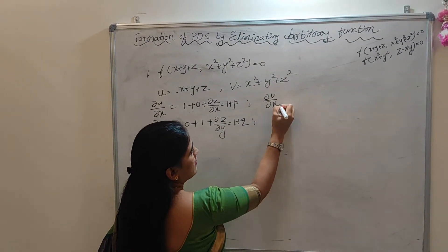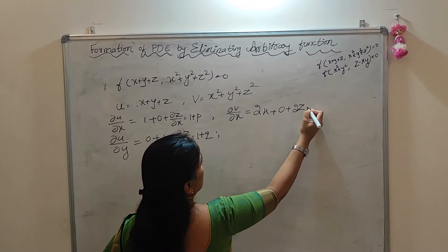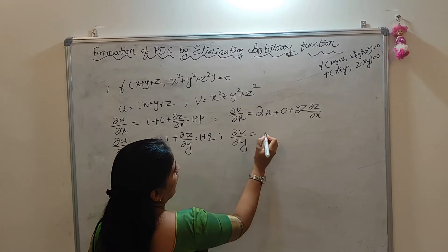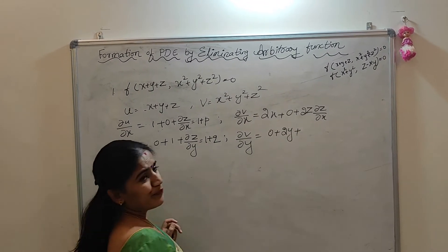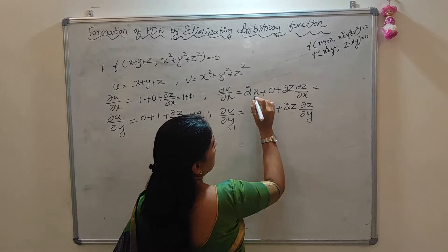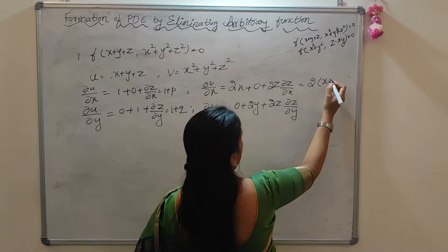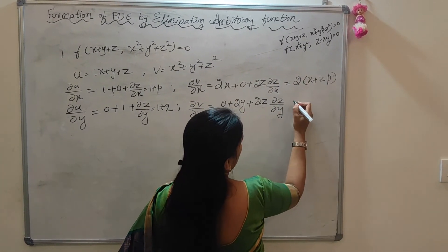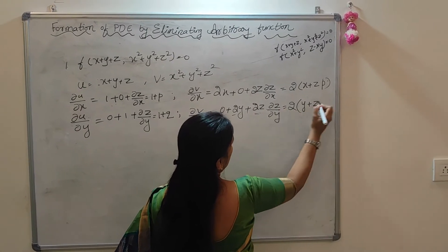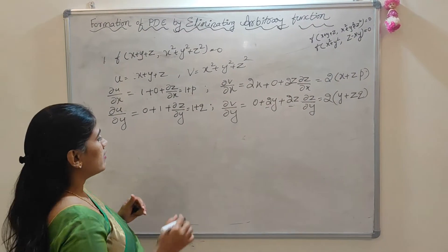Next, ∂v/∂x = 2x + 2z(∂z/∂x). Similarly, ∂v/∂y = 2y + 2z(∂z/∂y). Taking 2 as a common factor: ∂v/∂x = 2(x + zp) and ∂v/∂y = 2(y + zq). Now we substitute into the relation ∂u/∂x / ∂u/∂y = ∂v/∂x / ∂v/∂y.